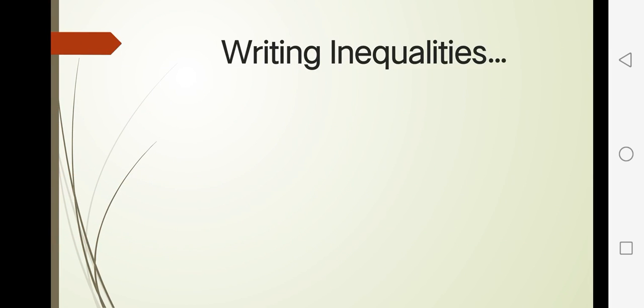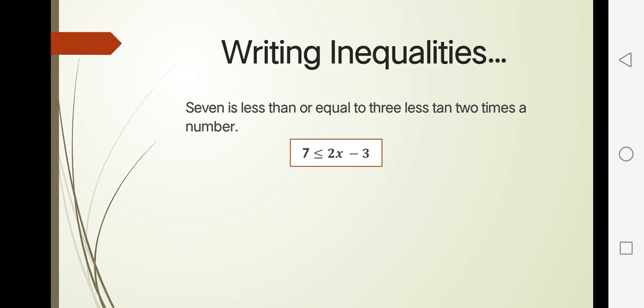Let's go to writing inequalities. 7 is less than or equal to 3 less than 2 times a number. That is how we write inequalities. We have 7 less than or equal to 2x minus 3.